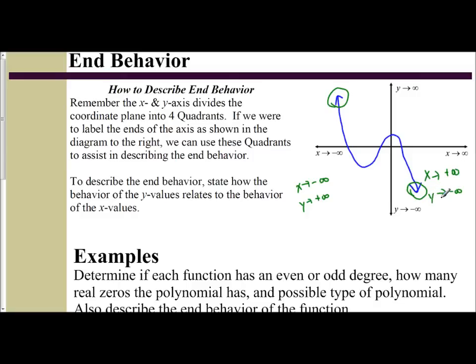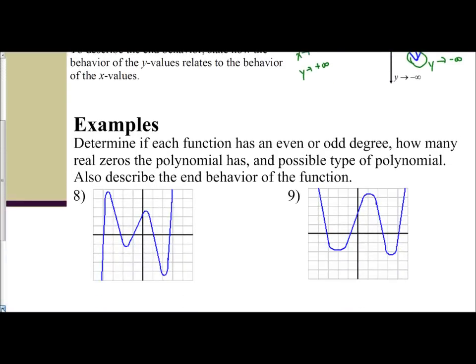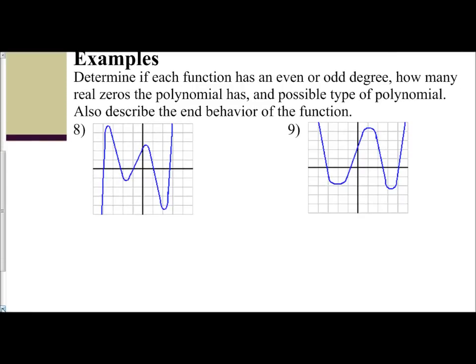So that's a quick way to assist you in describing your end behavior of polynomial functions. Let's practice with a couple of graphs. Determine if each function has an even or odd degree, how many real zeros there are — remember, zeros are x-intercepts — and the possible type of polynomial, which would be linear, quadratic, quartic, quintic, and also describe the end behavior. Looking at the ends of the first graph, the left side is pointing down and the right side is pointing up, so they're pointing in opposite directions. This is an odd degree polynomial.